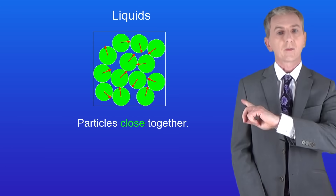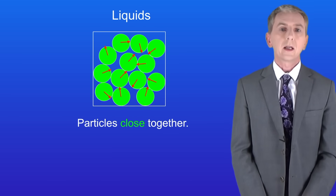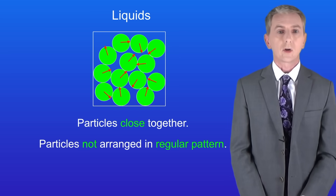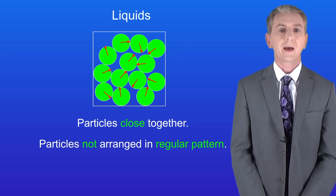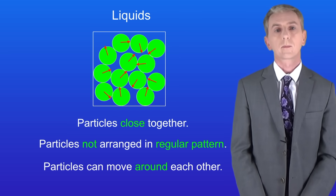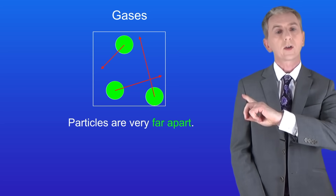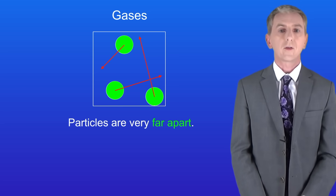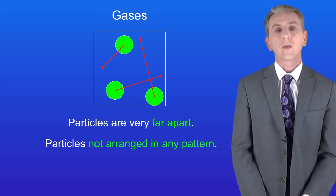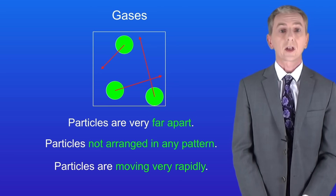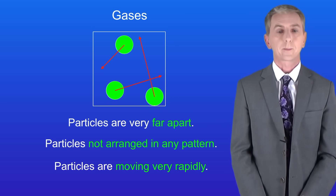In a liquid, the particles are still close together but they're not arranged in a regular pattern. In fact, the particles in a liquid can move around each other. In a gas, the particles are very far apart and they're not arranged in any pattern. In a gas, the particles are moving very rapidly.